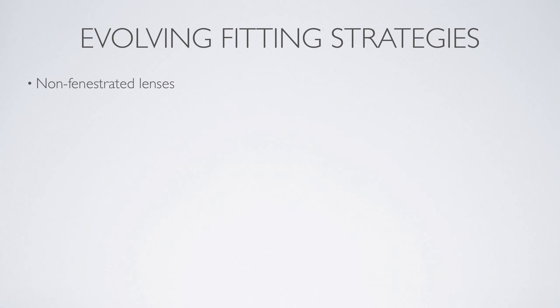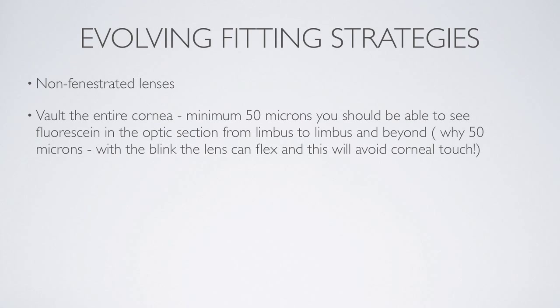I always want to vault the cornea by a minimum of 50 microns. I choose 50 microns because the lens can actually flex a little with blink and the lens can touch the cornea — I want to avoid corneal touch. So 50 microns is my minimal area of clearance under the lens. I avoid bubbles on insertion.